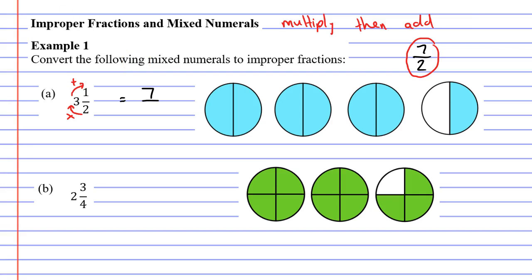That gives us our numerator of 7. What number goes at the bottom? Well whatever number was at the bottom of our mixed numeral must be the number that goes at the bottom of our improper fraction. So it needs to be 2.